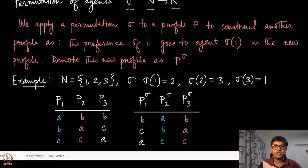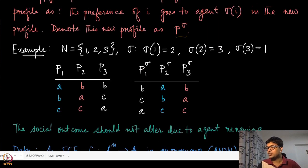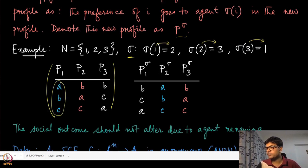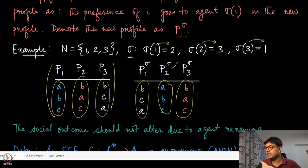Applying permutation sigma to a preference profile p constructs a new profile where the preference of agent i goes to agent sigma(i) in the new profile, denoted p^sigma. For example, with three agents and sigma mapping 1→2, 2→3, 3→1, agent one's preference goes to agent two, agent two's to agent three, and agent three's to agent one.